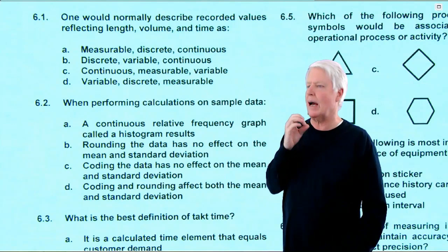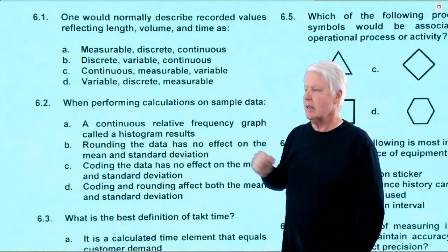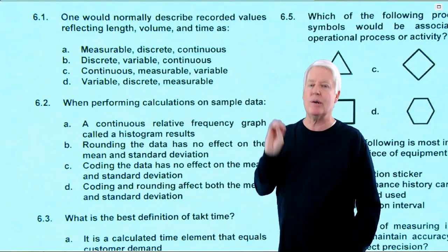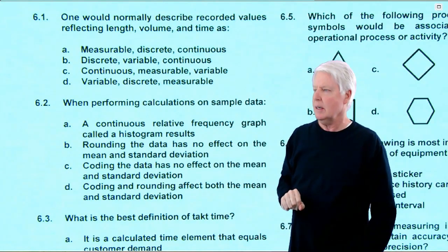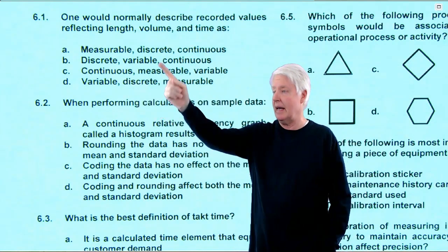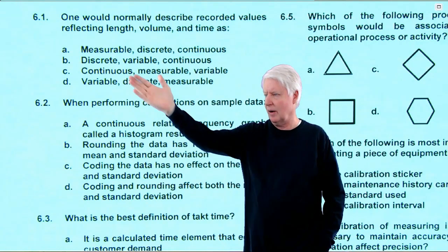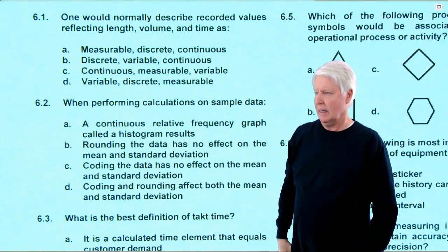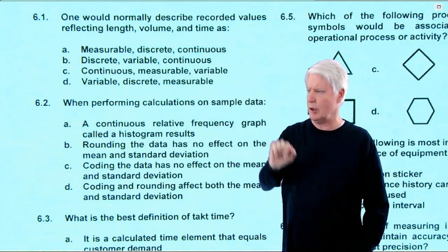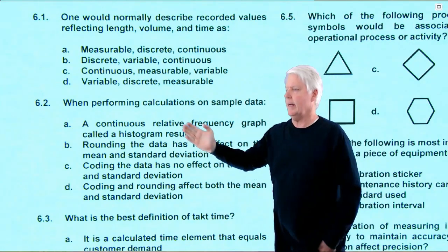Question 6.1: One would normally describe recorded values reflecting length, volume, and time as what? Measurable? Yes. Discrete? No — discrete is attribute data, two options, which doesn't fit. Any answer with 'discrete' is wrong, so A, B, and C are eliminated. The only remaining option is continuous, measurable, and variable — and yes, all three of those descriptors apply to length, volume, and time. Answer 6.1 is C, and it is correct.